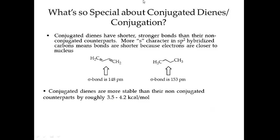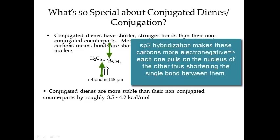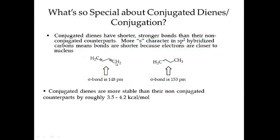What's special about conjugation is that the carbons here and here are closer together, and all of the p orbitals in this system are able to overlap. This sigma bond is about 148 picometers. This sigma bond between these two sp3 hybridized carbons is about 153 picometers. A conjugated system is roughly 3.5 to 4.2 kilocalories per mole more stable than the corresponding non-conjugated system.